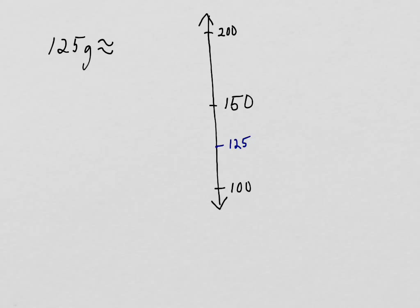Now, if I round this to the nearest 100, the first thing I have to do is I have to do the same process. Is this less than or greater than the halfway point? The halfway point is 150, and I see that it is less than the halfway point, so I round down. And if we think about it, it makes sense. It is closer to 100 than 200. It is 25 away from 100 and 75 away from 200. So, 125 grams is about 100 grams.